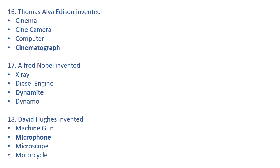Thomas Alva Edison invented — the right answer is cinematograph. Cinema was invented by the Lumière brothers of France in 1895. Cine camera was invented by Friese-Green of Britain in 1889. Computer was invented by Charles Babbage of Britain in 1834, who is also known as the father of the computer.